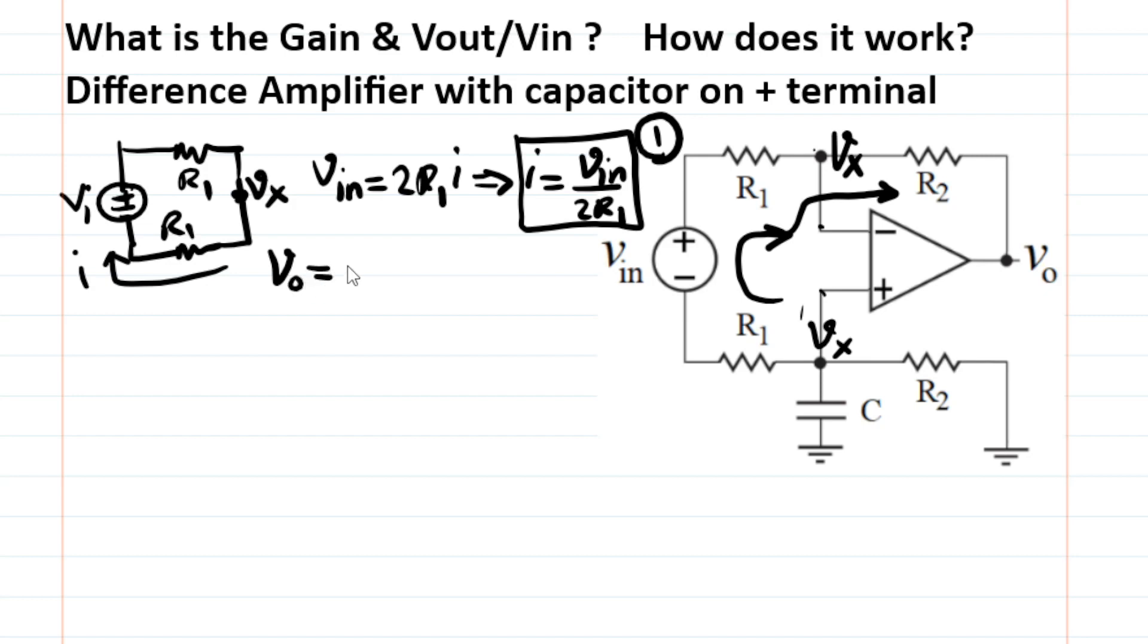Vout is simply then Vx minus the voltage drop across R2, which is R2 times, that's this current. Okay, the problem is I don't know Vx. So, but I can write a KCL here on positive terminal because that voltage is also Vx. And then I'm done.